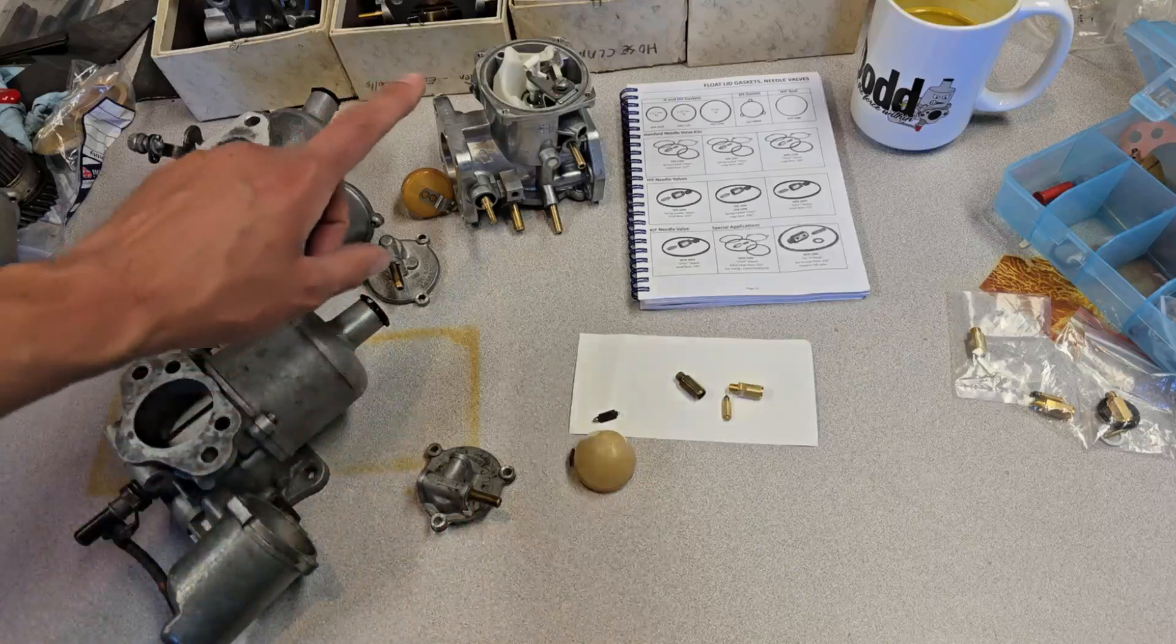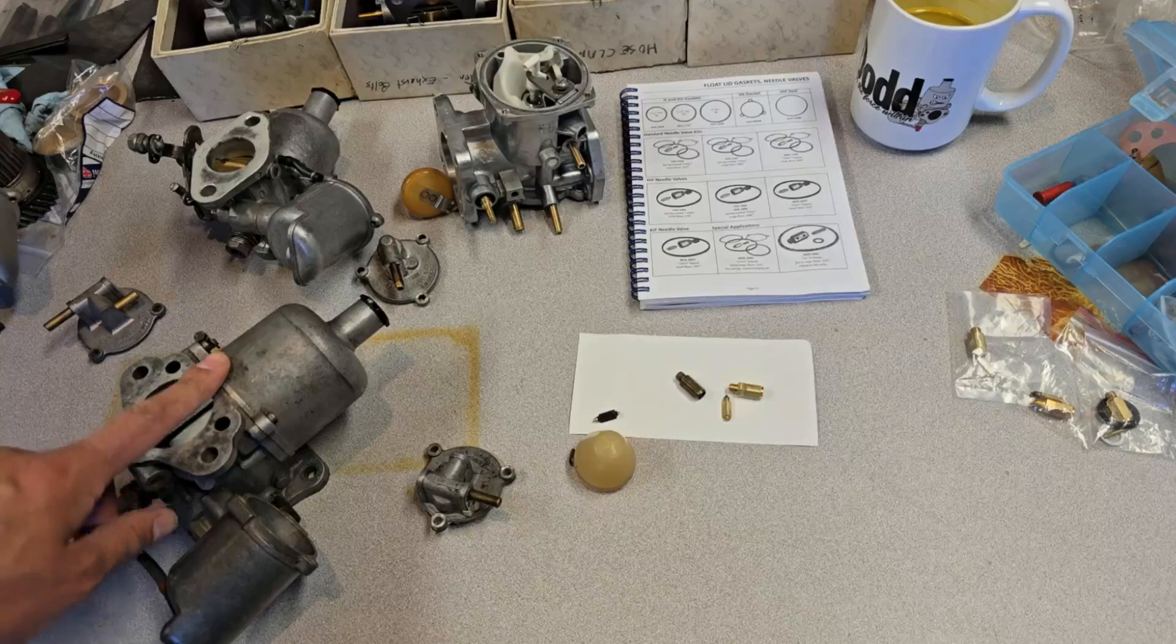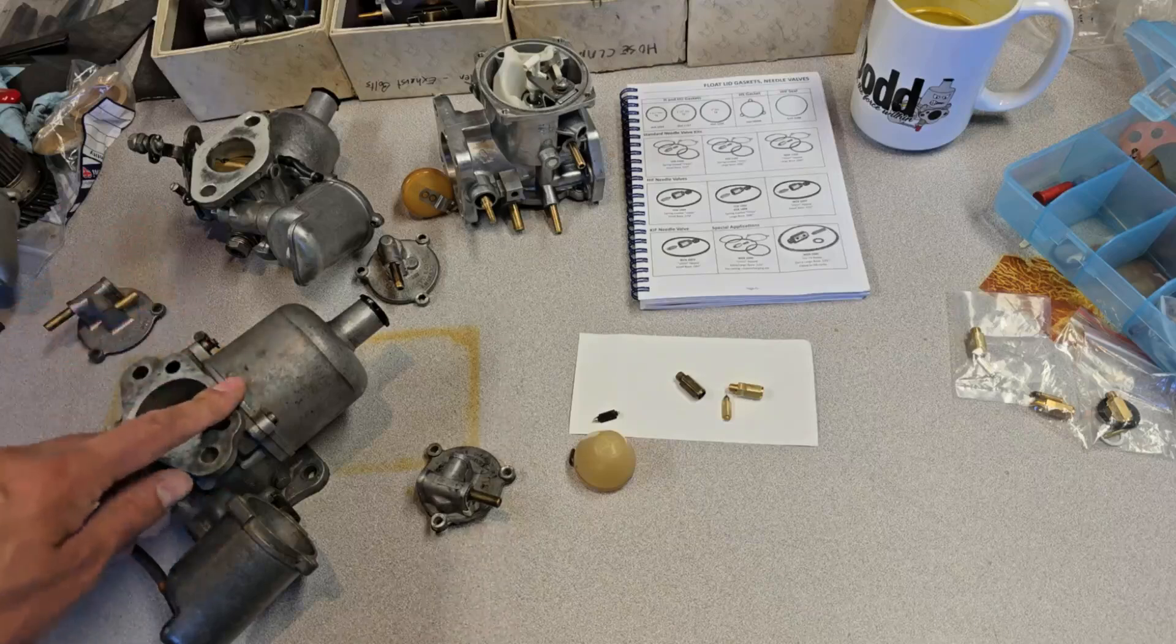And the pressure for an HIF carburetor is two to three pounds, the HS4 or two, 1.25 pounds max.